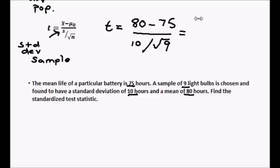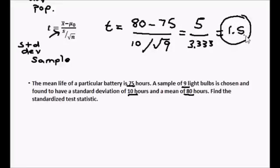That gives us 5 over 10 divided by square root of 9. If I do that on my calculator I get 3.333. 5 divided by 3.333 is going to give us 1.5. So this is our t score and this is also our standardized test statistic.